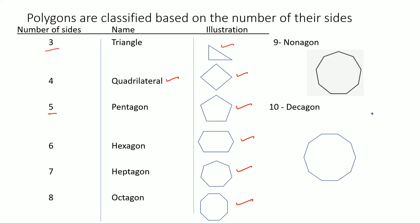Nine sides, nonagon. And if it has 10 sides, it's called a decagon.